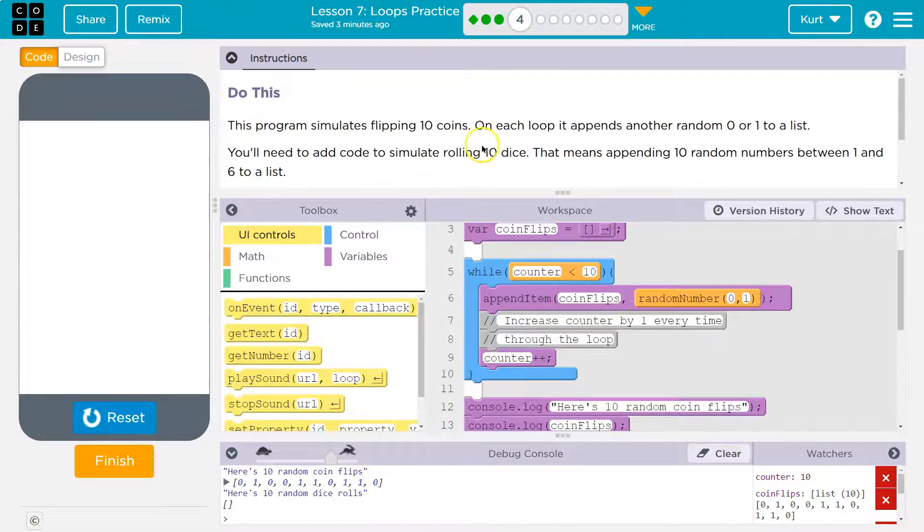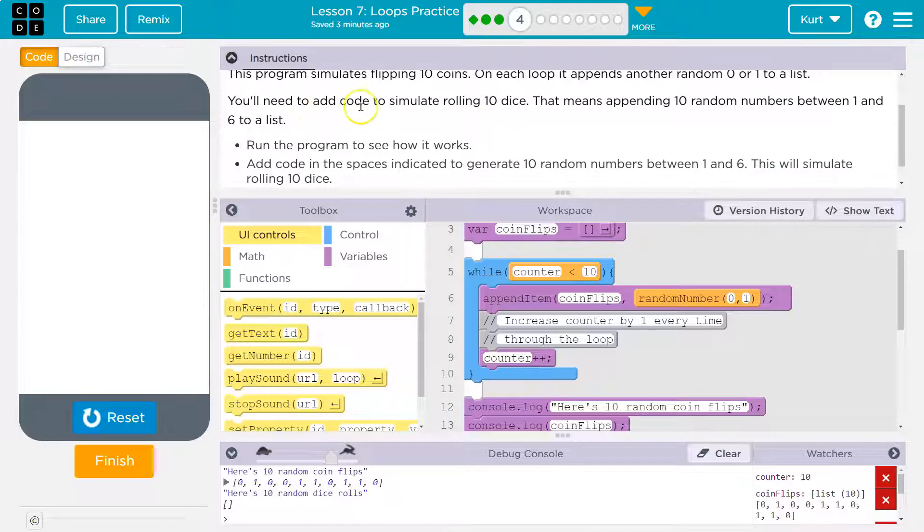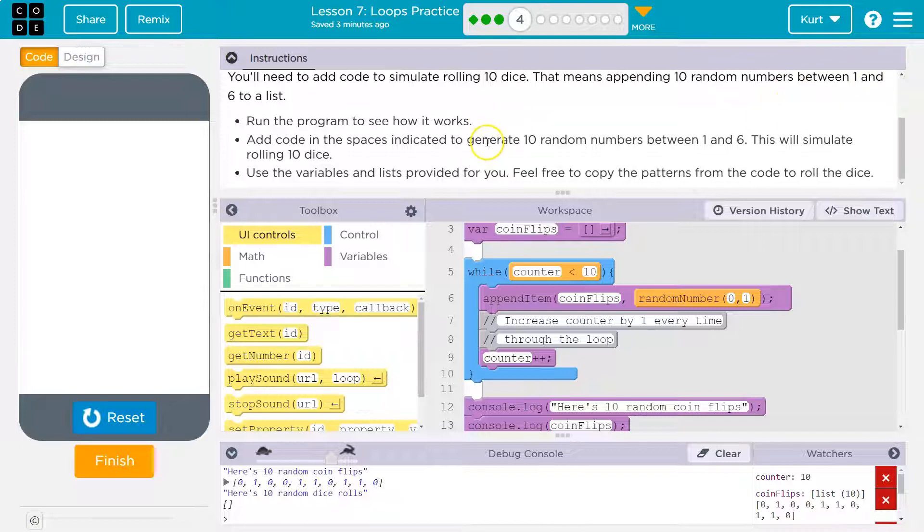All right, you'll need to add code to simulate rolling a dice. That means appending 10 random numbers between one and six to a list. Run the program. Got it.